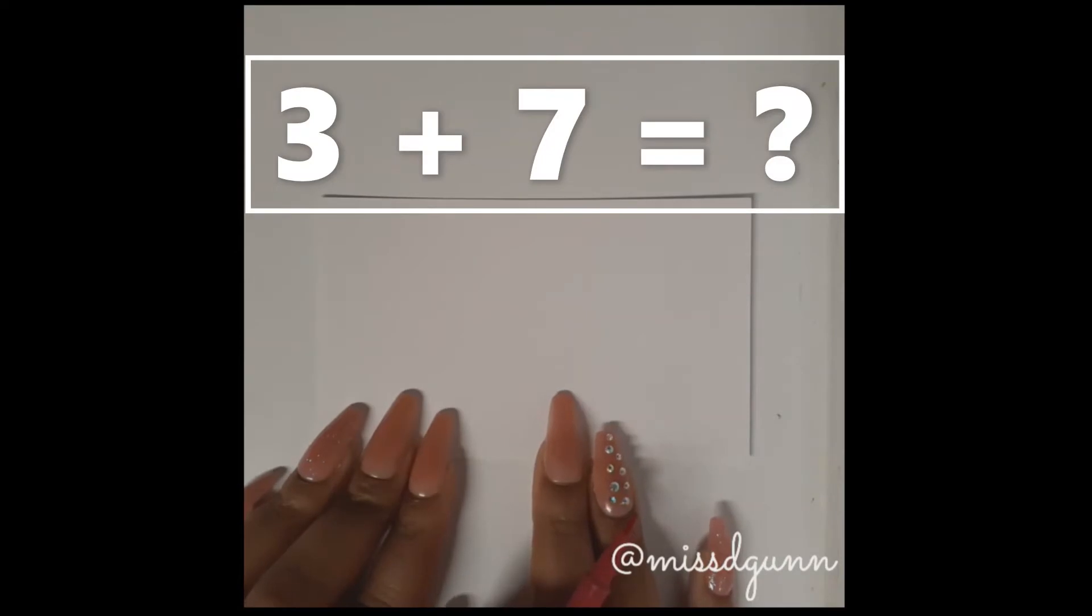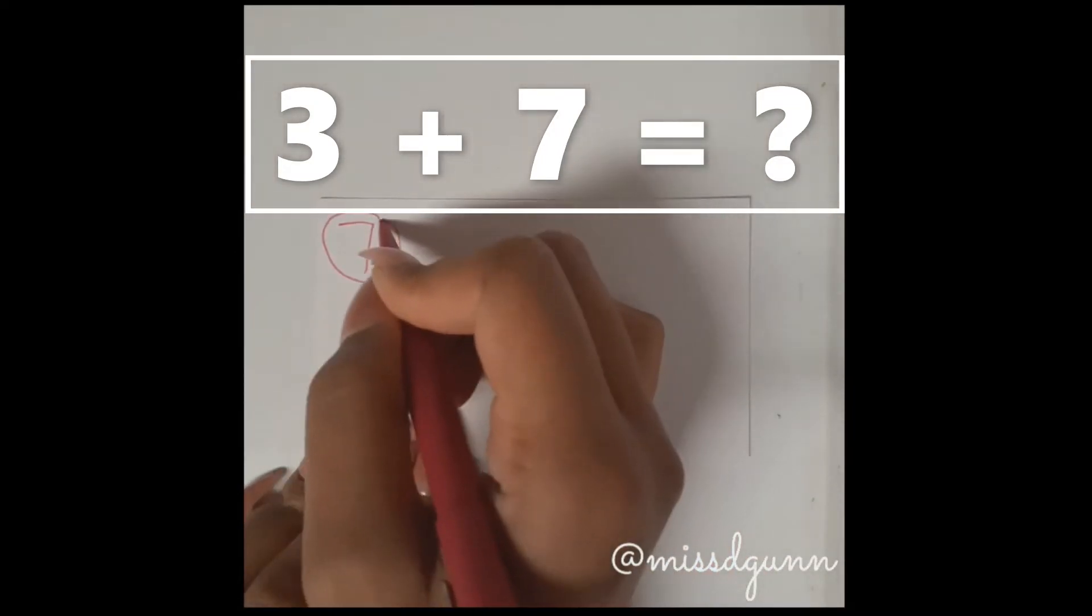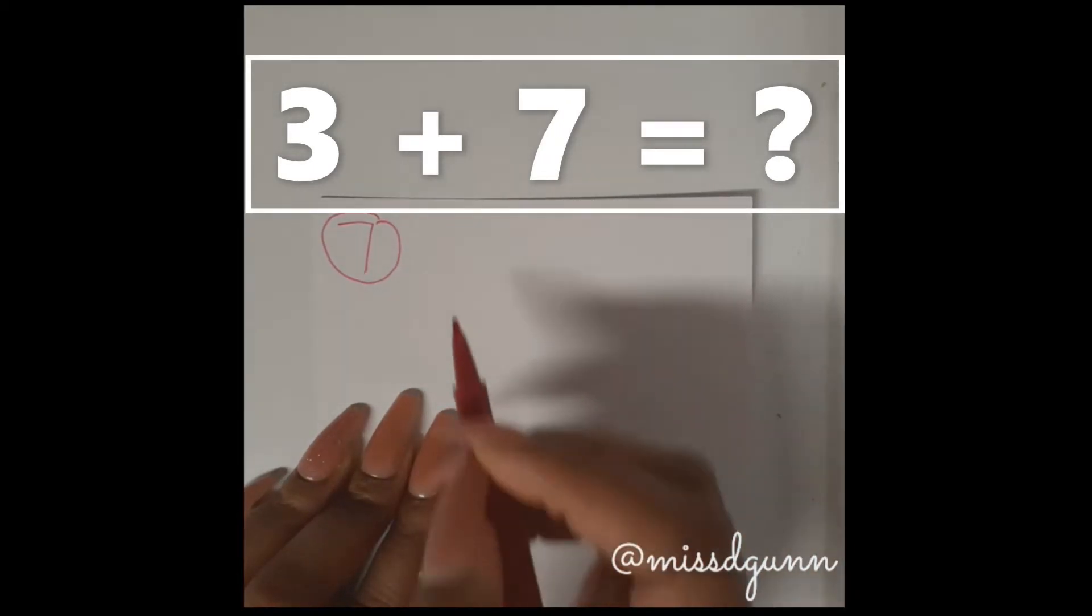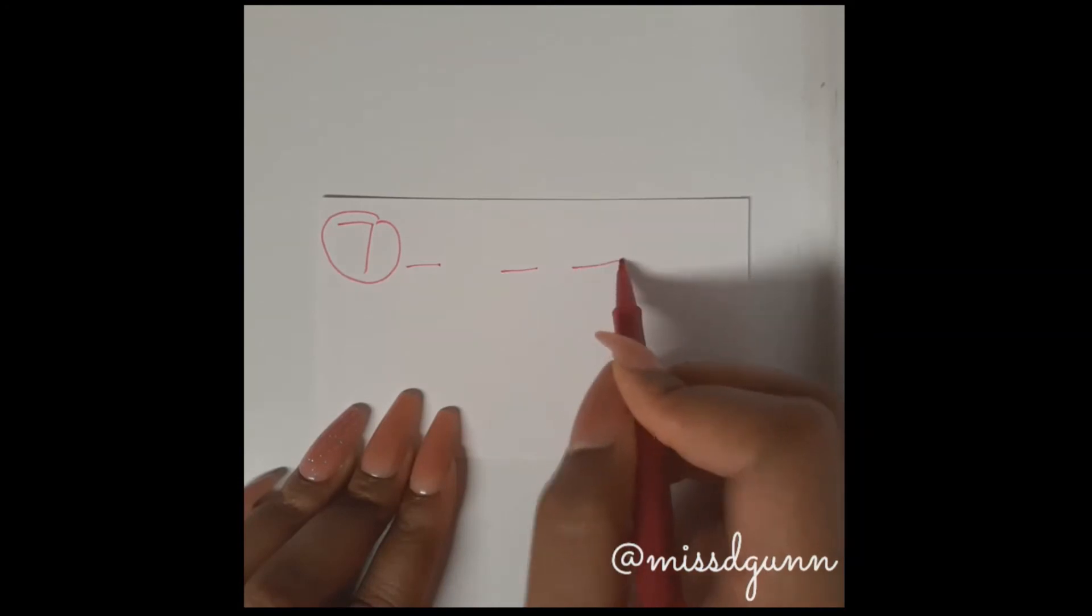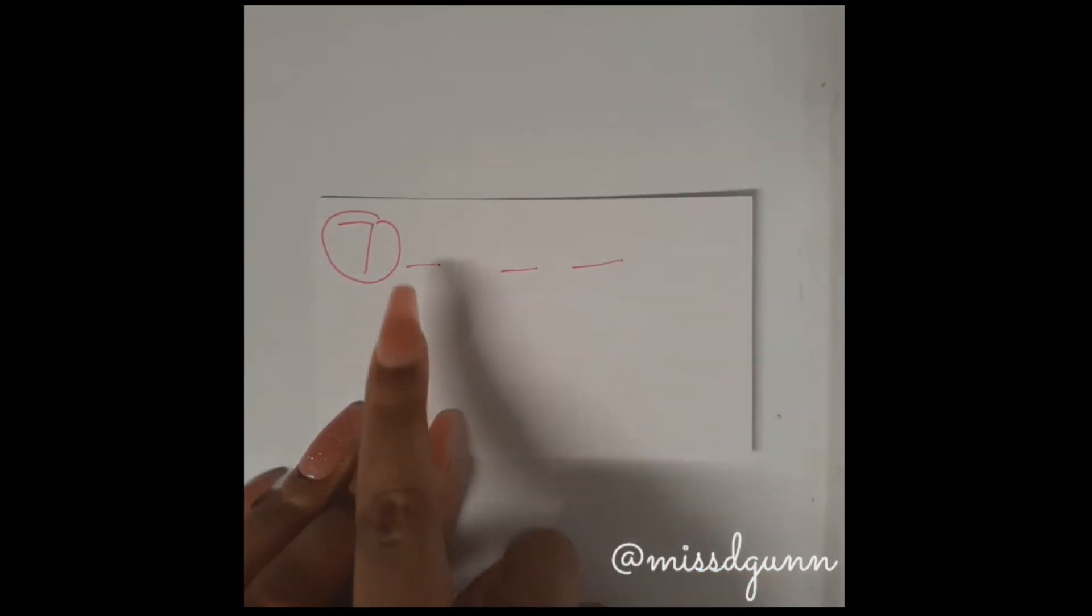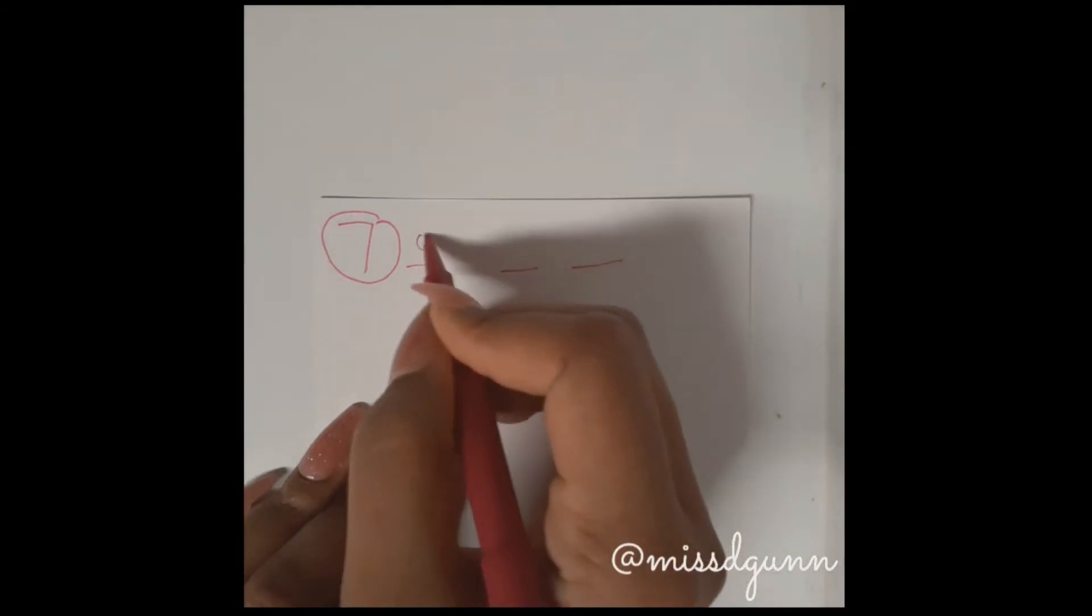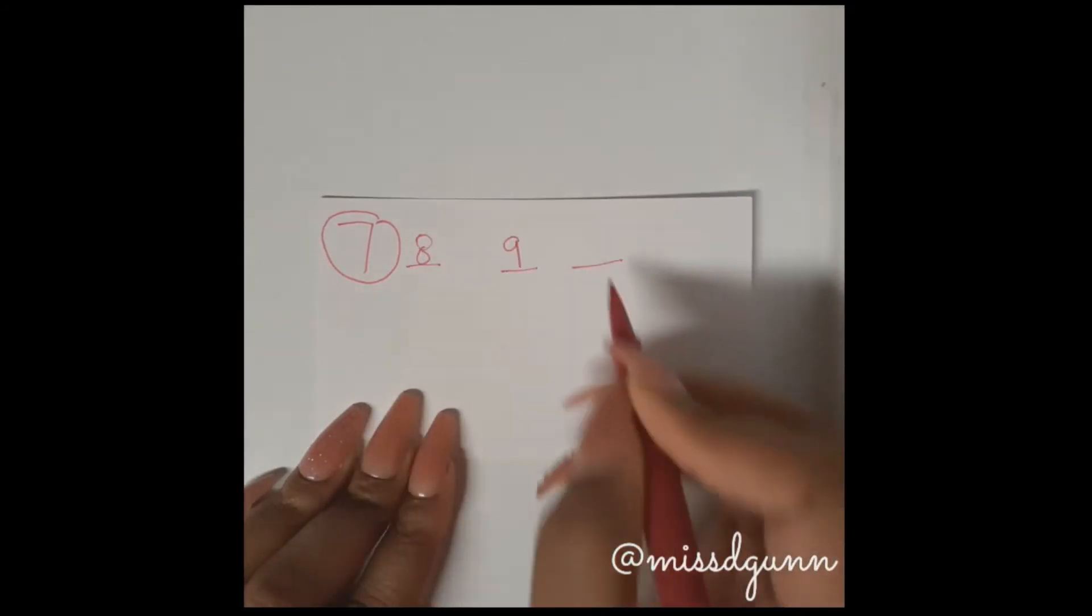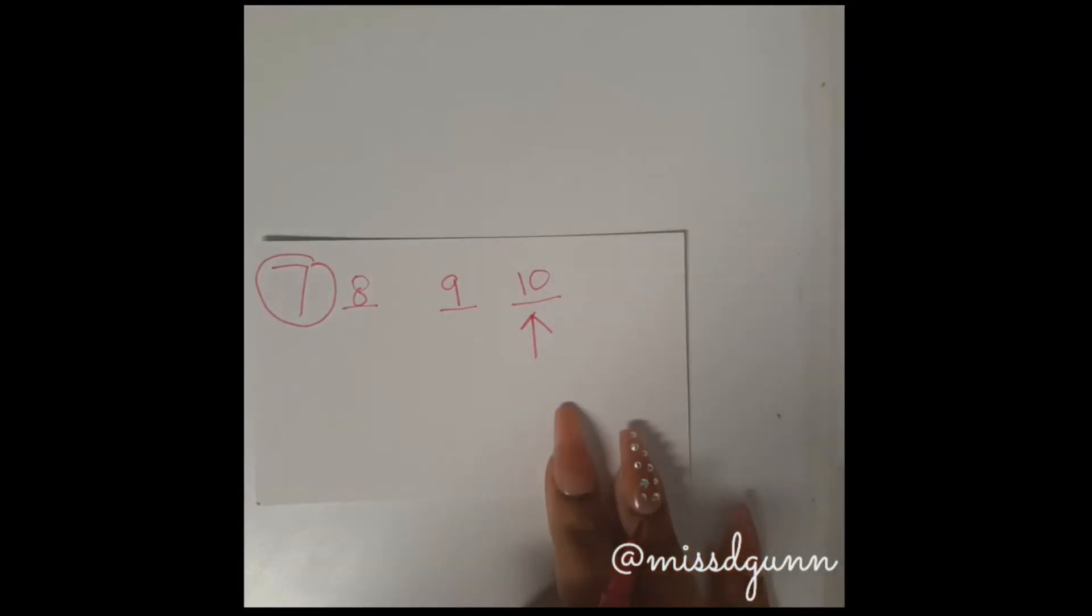To start, you would have your learner write the larger addend and then circle it, and then look at the smaller addend and draw that amount of spaces next to the larger addend. And from there, they can either count starting at that larger addend and go up, or they could write those numbers following it. Once they do that, the number that they write last, that'll be their answer.